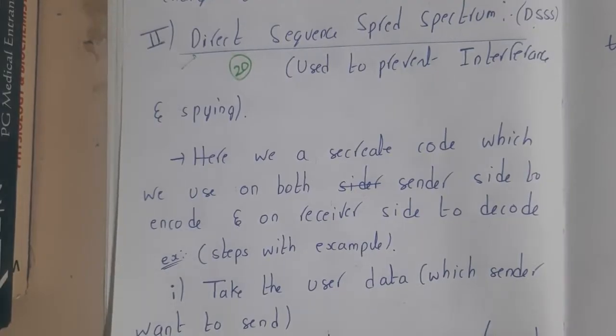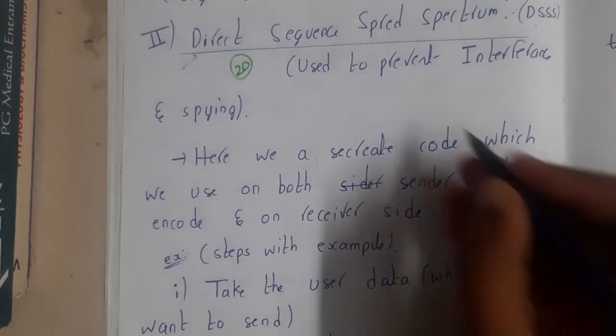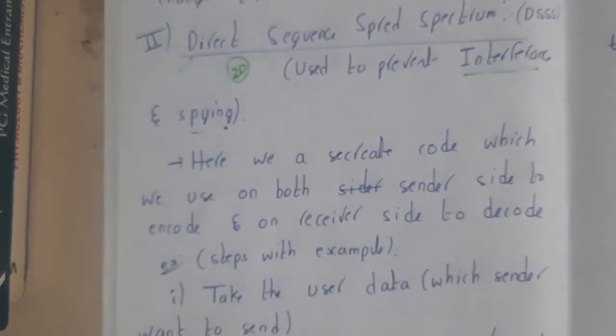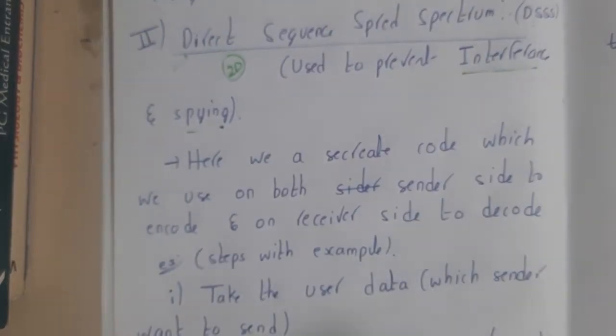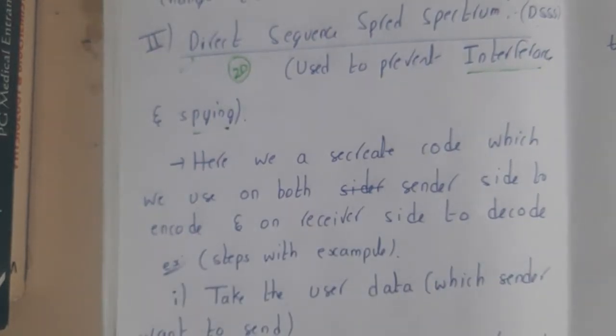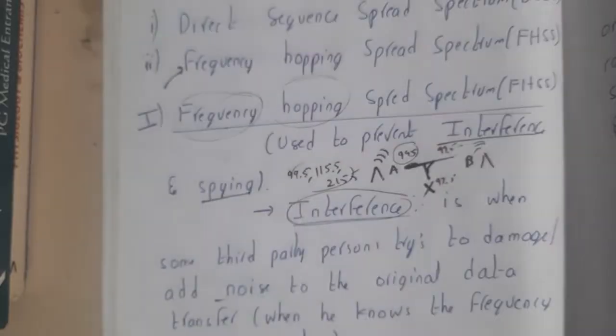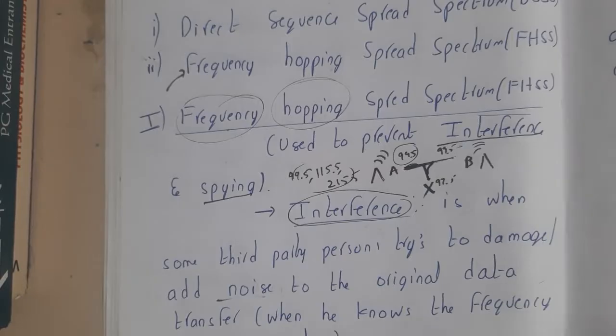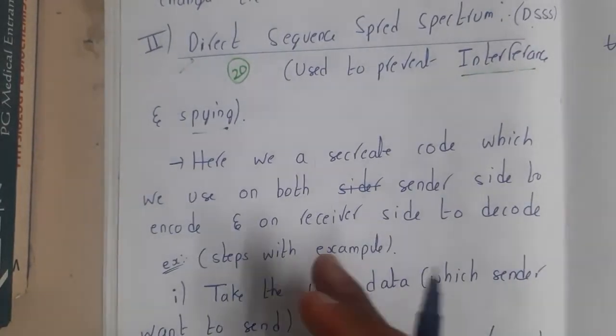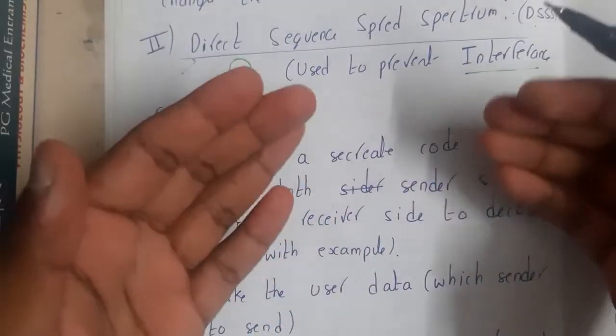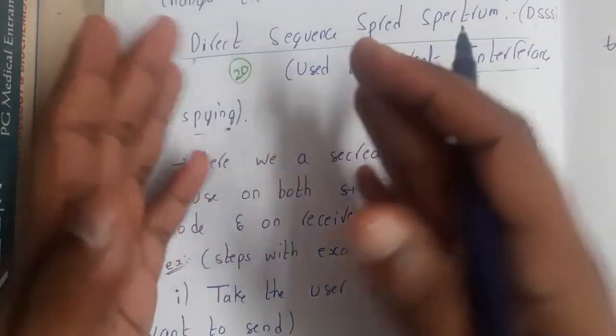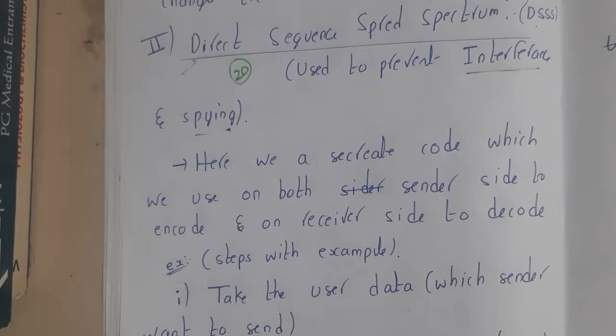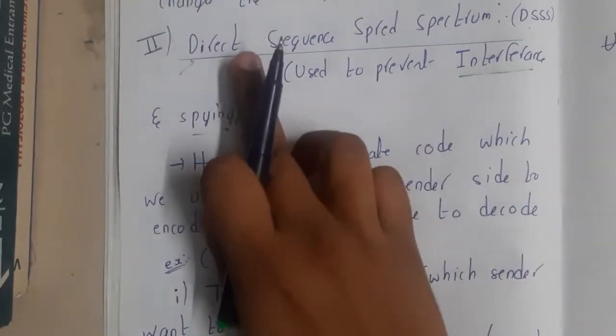The main goal of spread spectrum is to reduce interference and prevent spying on our transferring data. In our last lecture, we discussed frequency hopping by changing the frequency every sometime. But that method has issues - you need to change again and again, and all signals should be properly attachable for clear communication. To reduce all those issues, we can use Direct Sequence Spread Spectrum.